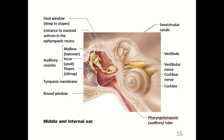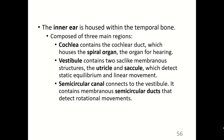From the oval window, sound waves pass through the cochlea and the spiral organ. The inner ear is housed within the temporal bone and has three major regions: the cochlea (containing the cochlear duct which houses the spiral organ for hearing), the vestibule (containing the utricle and saccule for detecting static equilibrium and linear movement), and the semicircular canals (connected to the vestibule, containing membranous semicircular ducts that detect rotational movement).